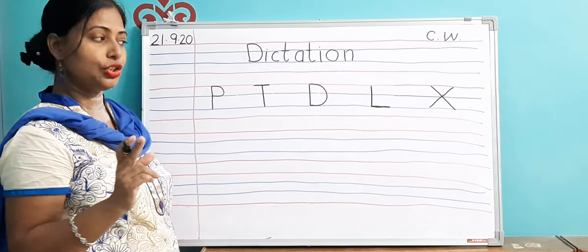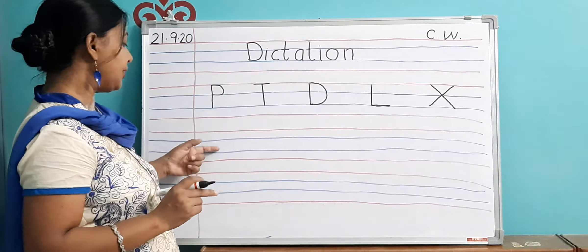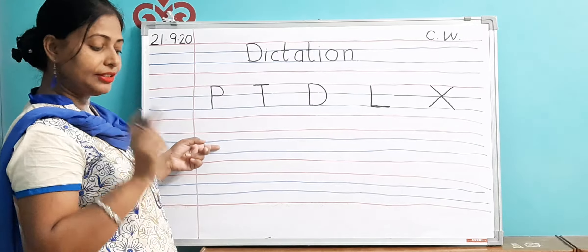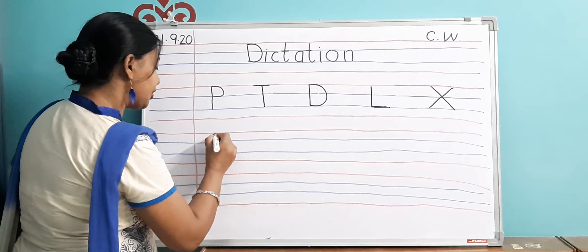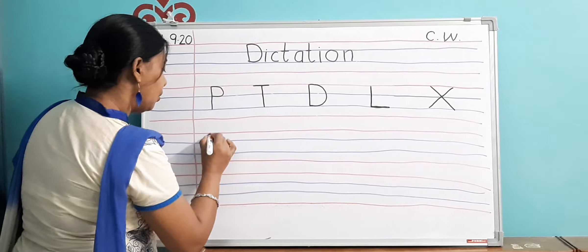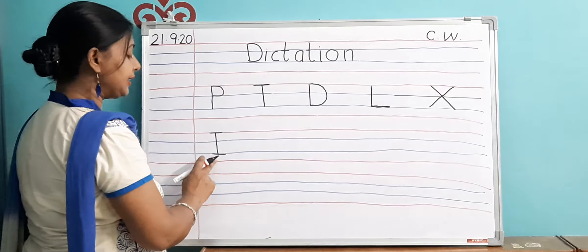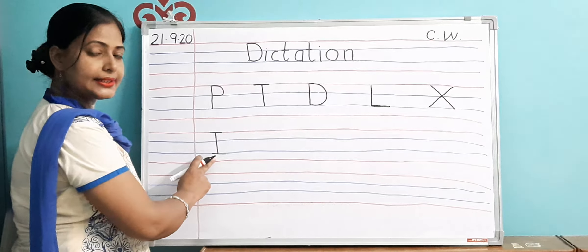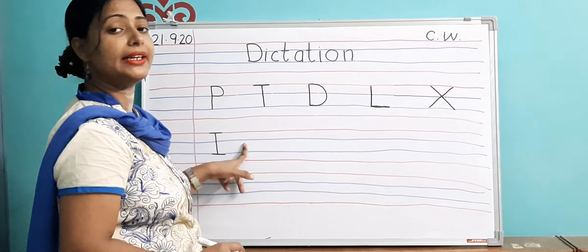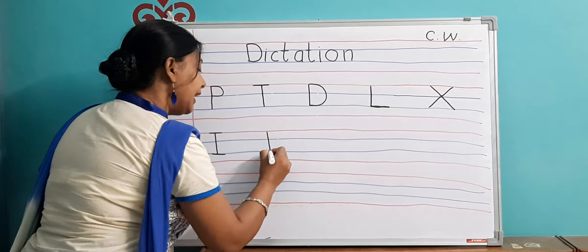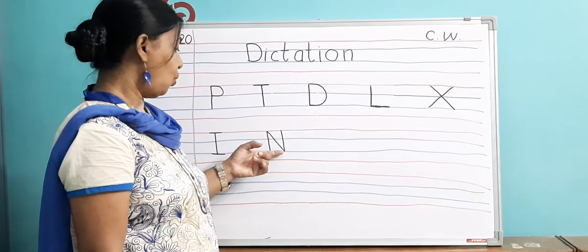You are going to write only five alphabets in one line. Now write the next alphabets from the next line. The sixth alphabet is I — I for ice cream — write I in the next line. Leave one finger space, then write N — N for nose.